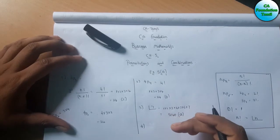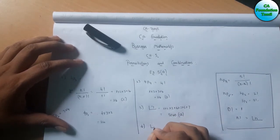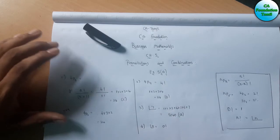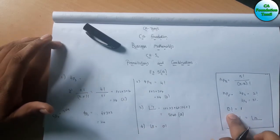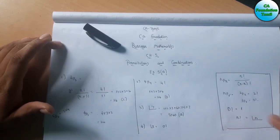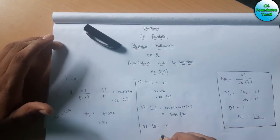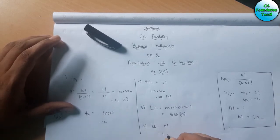Sum number 4 is factorial of 0. Factorial of 0 equals 1. This is the fourth sum. The answer is 1, option B.